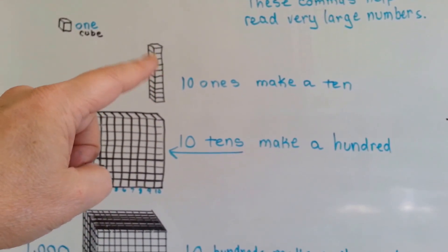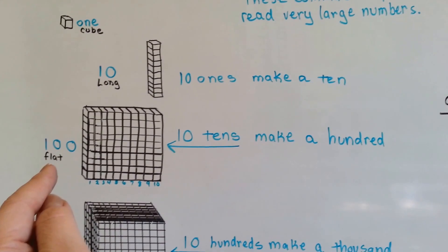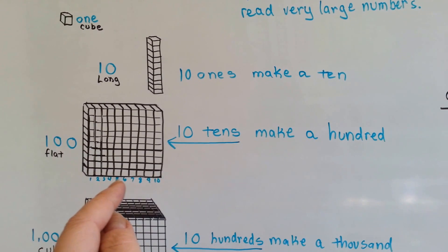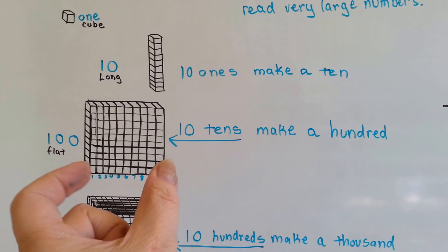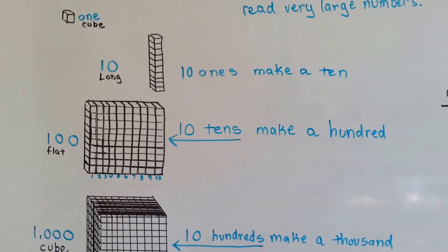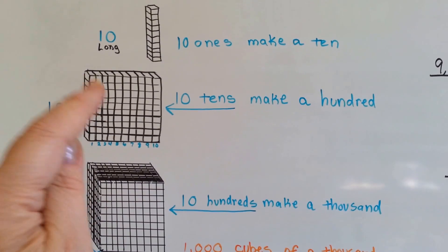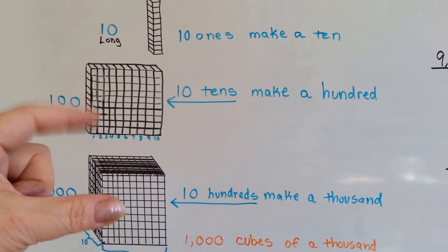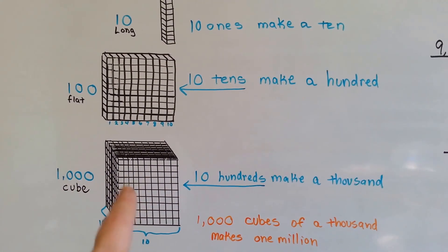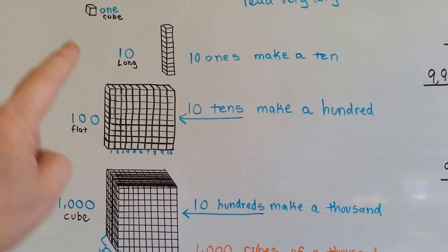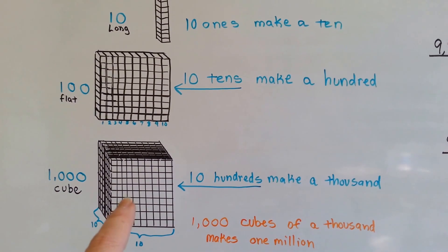If you were to put ten of these and squish them together, you'd get one of these. That's a flat. There's ten of these guys right here smushed next to each other. See it? If you were to get ten of these and stack them all in front of each other, you'd have a cube, and there would be a thousand in here.